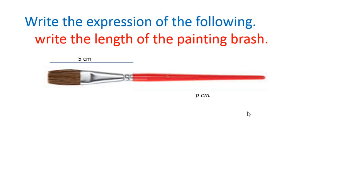Write the expression of the following: write the length of the painting brush. Here we have to use a variable to express the algebraic formula. The total length we have to find out. This part length is 5 cm and the handle part length is p cm. This is the variable. To find out the total length, we have to add 5 + p. This is the expression. The length of the brush is 5 cm plus p cm.